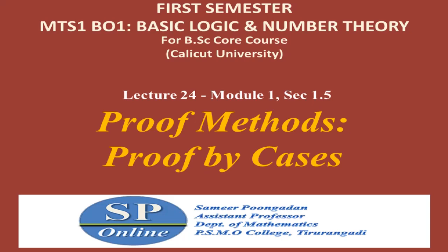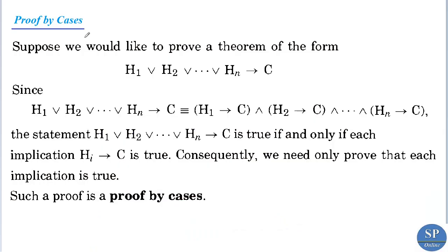Today we are going to discuss another proof method which is proof by cases. Suppose we have to prove a theorem of this form: H1 disjunction H2 disjunction H3 etc. disjunction Hn implies C. That is, the left-hand side is the disjunction of the hypotheses H1, H2, etc., Hn.